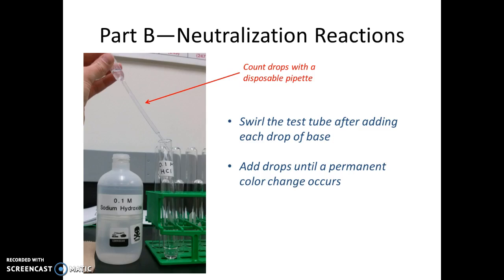Keep adding drops of sodium hydroxide until you see a permanent color change — when the solution turns pink, that indicates the end of the neutralization reaction. As you approach the endpoint, the solution may briefly turn pink but return to colorless after swirling; a permanent change means it stays pink even after mixing. Repeat this for all four neutralization reactions, recording the number of drops of sodium hydroxide added in your data table for Part B. When finished, pour the solutions down the drain, wash your test tubes, and you're done with the experiment.